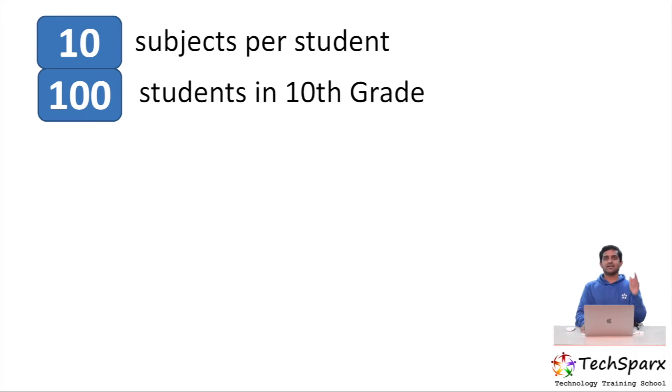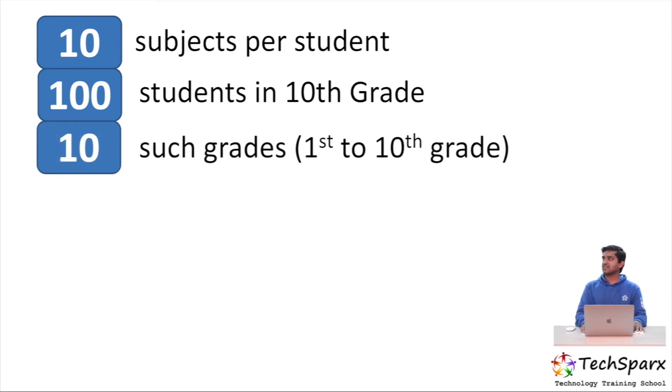Now let's say there are 10 such grades, first standard to 10th grade. So 1000 variables per grade, 1000 times 10. 10,000 variables are required for one particular branch, and if it is spread across 10 branches in the city.